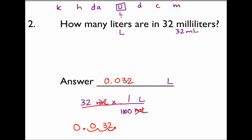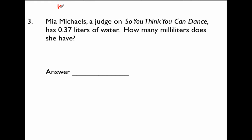Let's do one more word problem. King Henry doesn't usually — for capacity it'll be liters — drink chocolate milk. Mia Michaels, a judge on So You Think You Can Dance, has 0.37 liters of water. How many milliliters does she have?